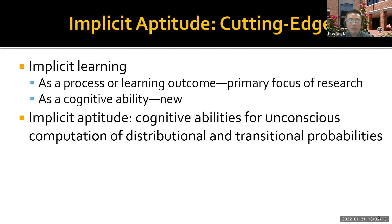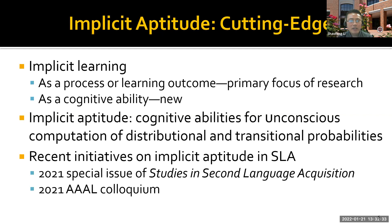My definition of implicit language aptitude in our field is: cognitive abilities for unconscious computation of distributional and transitional probabilities. Recent initiatives in implicit aptitude include a special issue of the journal Studies in Second Language Acquisition, which I co-edited with Robert DeKeyser from the University of Maryland. I also organized a colloquium at the annual conference of the American Association of Applied Linguistics.